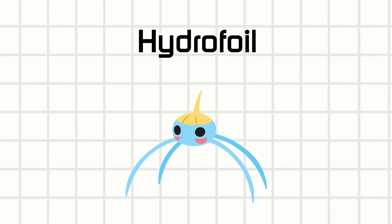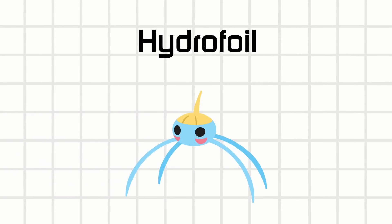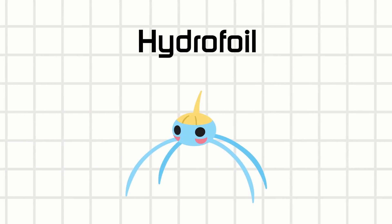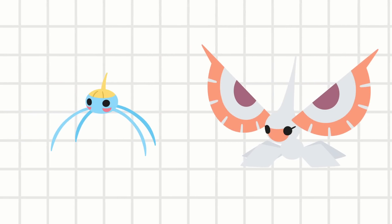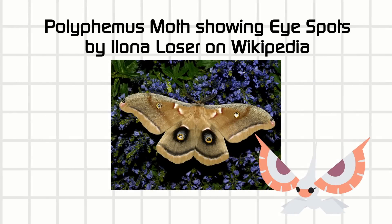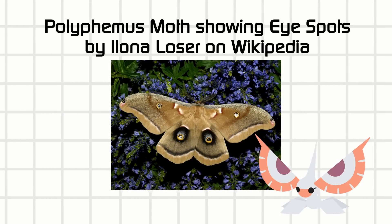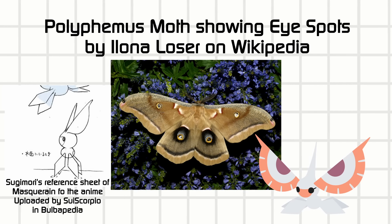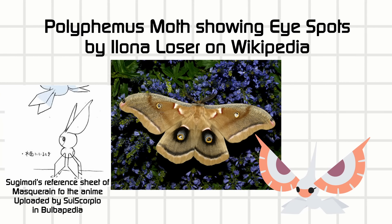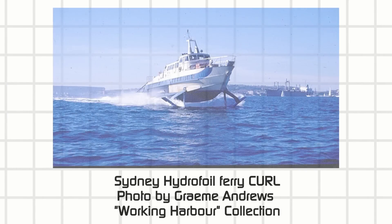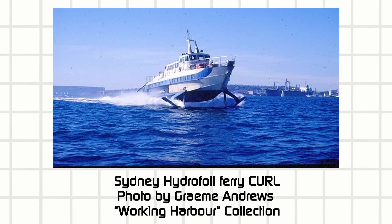Surskit as a water strider is a beautiful concept about water surface tension, but we're not going to talk about that today. Surskit evolves into Masquerain, which is much more like a moth with mimicry eye spots on their wings, but apparently they're still water striders according to Bulbapedia. When I saw the following concept I thought for sure that I should include Surskit in it, and the concept was the hydrofoil.